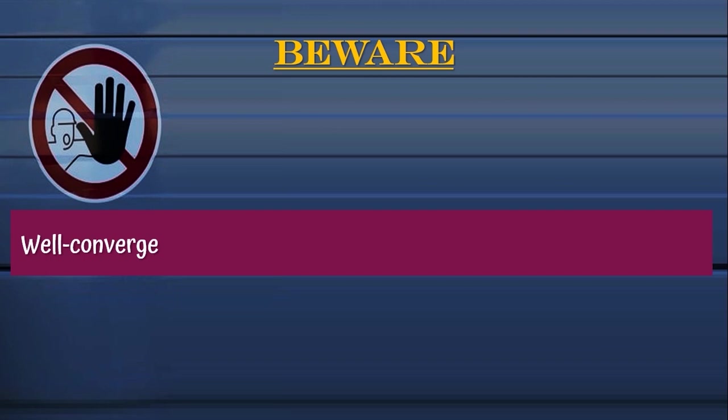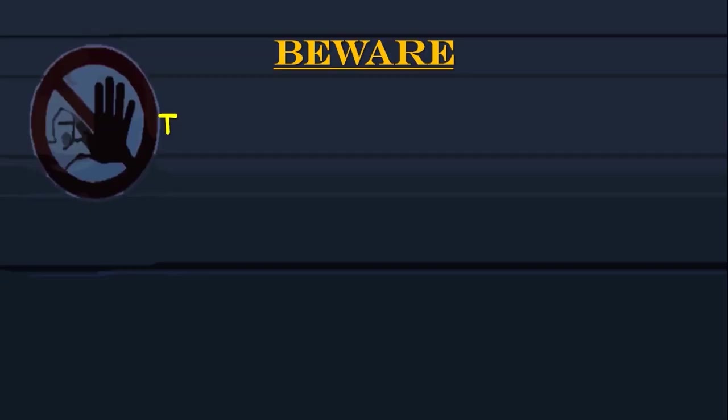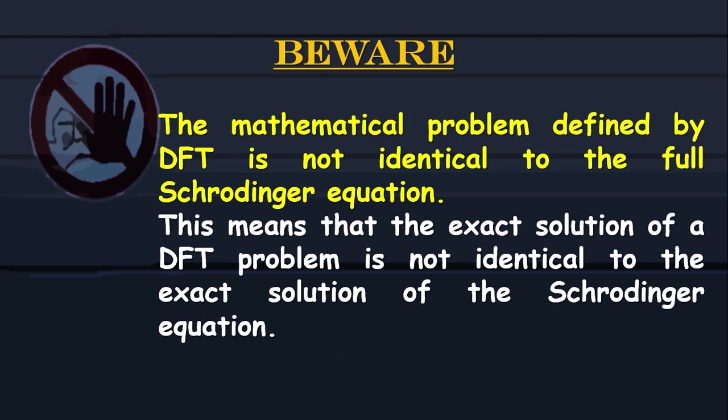But be aware, what we have talked about is your results are well-converged when they accurately approximate the problems as posed by DFT. But the concept of numerical convergence is quite separate from the question of whether DFT actually describes the physical reality or not. As we do not know the exact precise form of the XC functional, the mathematical problem defined by DFT is not identical to the full Schrodinger equation. This means that the exact solution of a DFT problem is not identical to the exact solution of the Schrodinger equation.